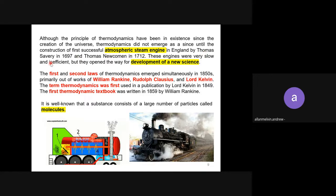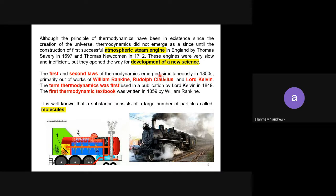Even though the early engines were very slow and inefficient, people started to study this new science — that's when the engineering side of thermodynamics came in. The first and second laws of thermodynamics emerged from this era. Temperature scales such as Rankine, Celsius, and Kelvin all came from this period. Scientists also discovered that when dealing with heat energy, there are molecules inside — a larger number of particles — which we cannot see with our naked eyes.